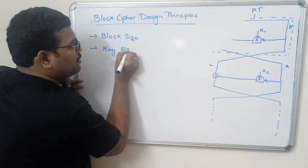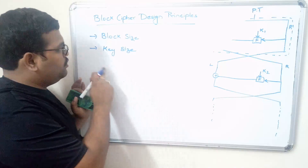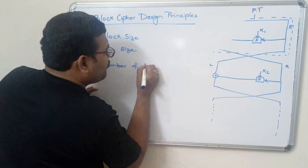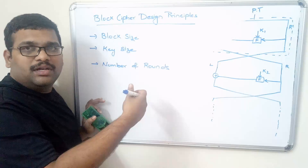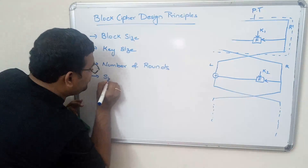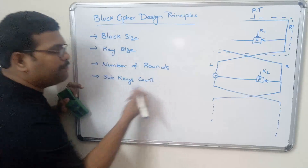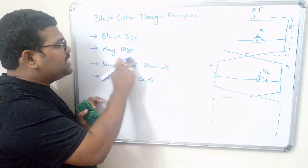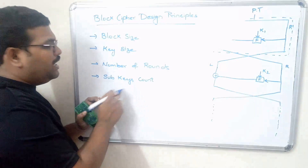Next is key size. We have to use a key from which we generate the sub-keys. Next is number of rounds — the plaintext is processed to the ciphertext in a number of rounds, and in each round the same process goes on. Next is sub-keys count, or number of sub-keys. In each round we have to use a separate sub-key, meaning from the master key we have to generate the sub-keys.